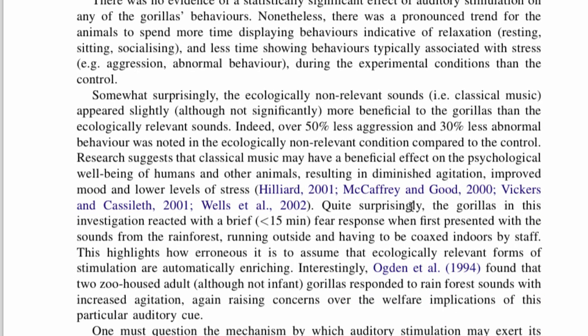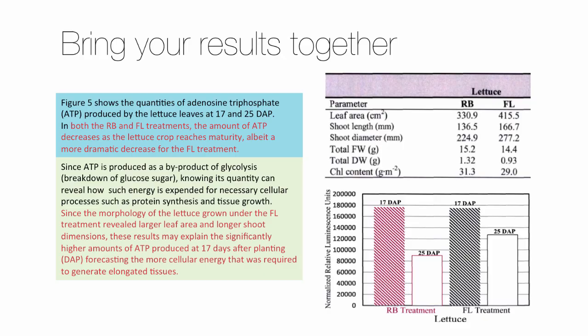The next part goes into the critical interpretation of the meaning of the results. But first let's talk about bringing your results together. The discussion is not simply a rewriting of the results section and then adding your opinion. The discussion section explores the main results of your experiments, and therefore one paragraph of this section can use the information contained in several figures or tables to make a single point. This is from a study on the growth of radish and lettuce plants under white light (FL) and red and blue LEDs (RB). The blue box is from the results and describes the trend shown in the figure. The green box is from the discussion — here the author combines information from this figure and this table in order to write his interpretation of the results.